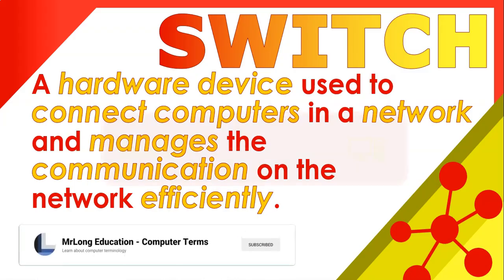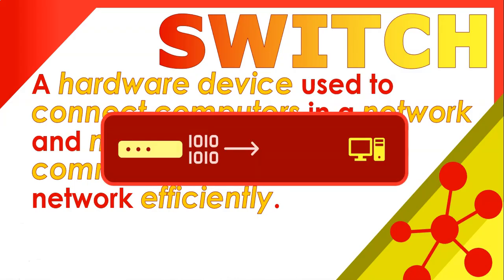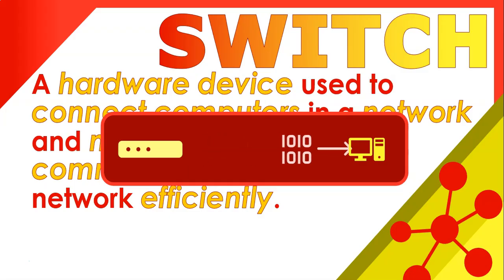What does that mean? Well, some devices will send information amongst various routes until it reaches its destination. A switch, however, is quite specific in that it sends its information directly to its destination, so it's a lot more efficient.